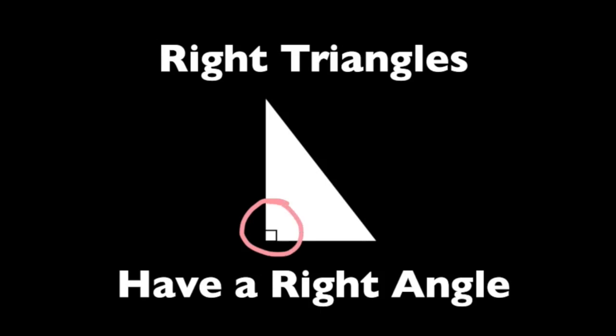Right triangles have one right angle. Because all the angles in a triangle add up to 180 degrees, there's only space for one right angle.